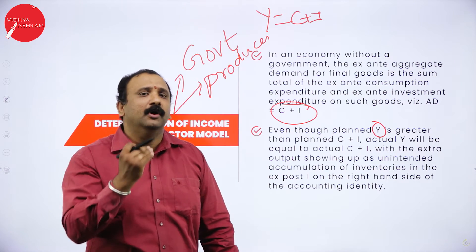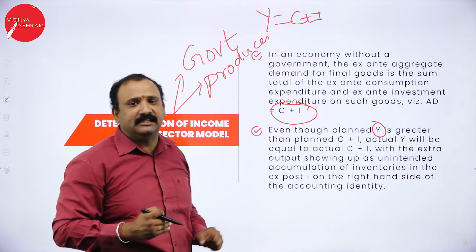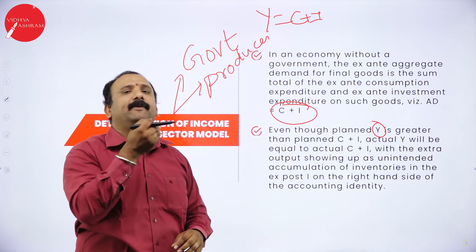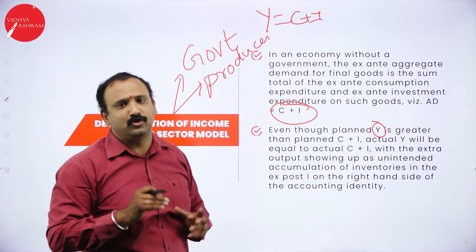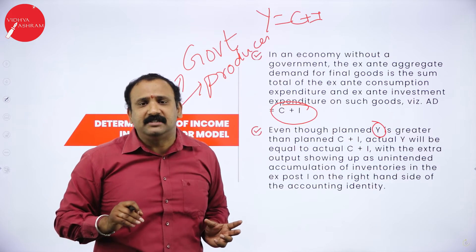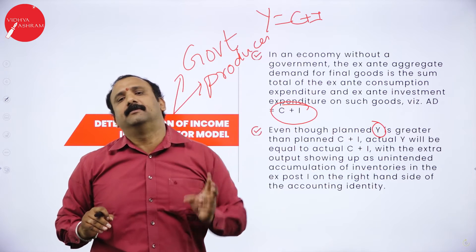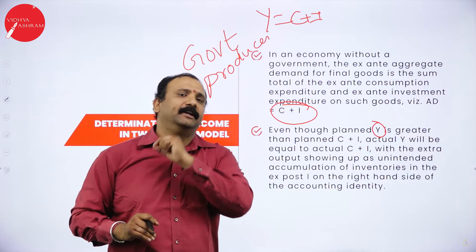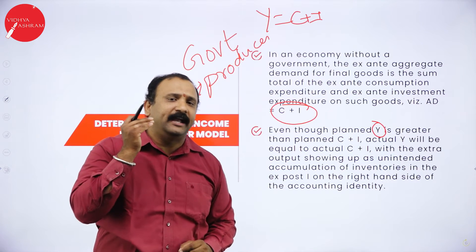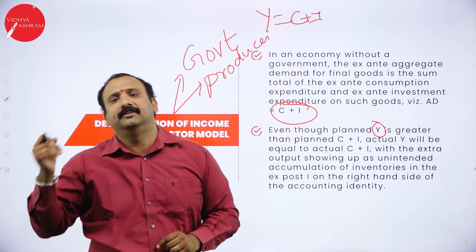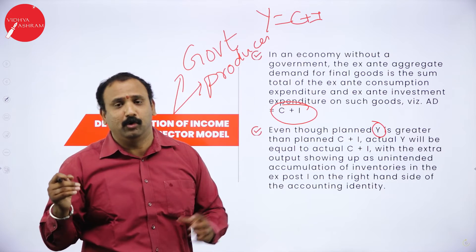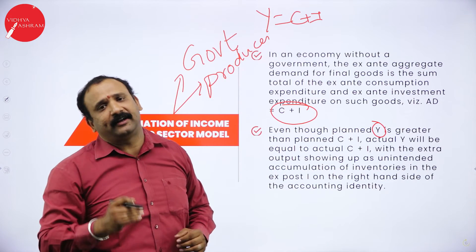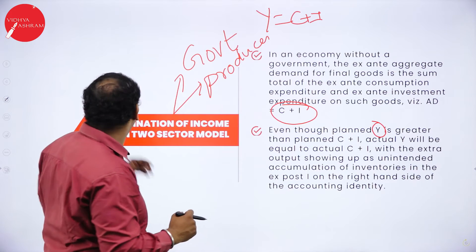At the end of the day, whatever the income is, it will represent consumption plus investment. At any given point in time, savings becomes a crucial factor. Whatever money is earned by a company will be either in consumption mode or investment mode, and the combination of the two gives the income factor altogether.